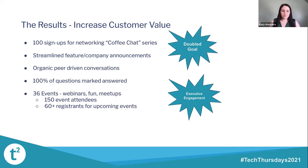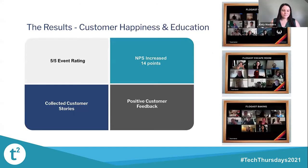Something we've noticed is we're getting a lot of executive engagement. In my time running other communities this was a big struggle, so it's nice to see that about a third of our audience is controller/director level and above — we even have VPs and CFOs coming into our community to engage. In the customer happiness and education section you can see screenshots of events like our coffee tasting and escape the room. We've received five out of five event ratings from our audience, and 100% say that they would attend another event.